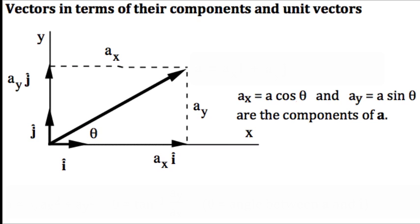So we can draw a vector a sub x i in the x direction, and another vector a sub y j in the y direction. Add these up to get a equals a x i plus a y j.